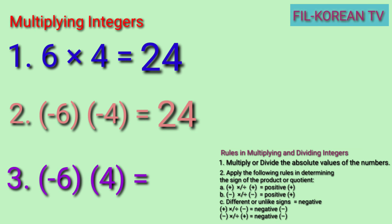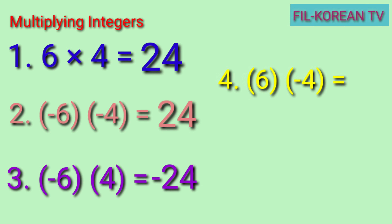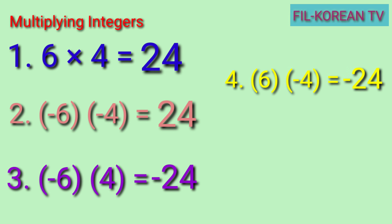Another example: negative 6 times positive 4. The signs here are different, so the answer must be negative. We will multiply the absolute value of negative 6 and positive 4 — just multiply 6 times 4. The answer is 24. And since the signs are different, the answer must be negative. So, the answer is negative 24. Same with if we multiply positive 6 times negative 4 — different signs, so the answer is negative 24.